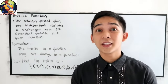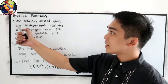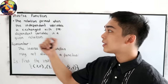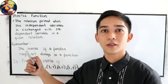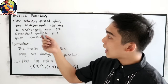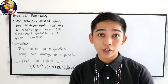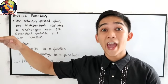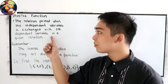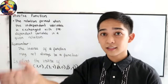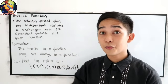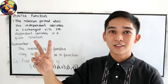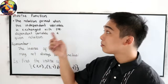First, let us define the inverse function. The inverse function is the relation formed when the independent variable is exchanged with the dependent variable in a given relation. The independent variable stands for our horizontal line, which is our x-axis. The dependent variable is our vertical line, which is our y-axis. If we interchange the two — the x-axis to the y-axis — that will be the inverse function.